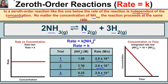In a zeroth order reaction the rate is independent of concentration. If we take 0.5 divided by 0.25 comparing trials two and three, we get two. Raising that to the m power and setting it equal to 2.0×10⁻³ divided by 2.0×10⁻³ gives one. So two to what power equals one? Anything to the zero power equals one, so m = 0. The rate law is: rate = k × [NH3]⁰ = k × 1 = k.